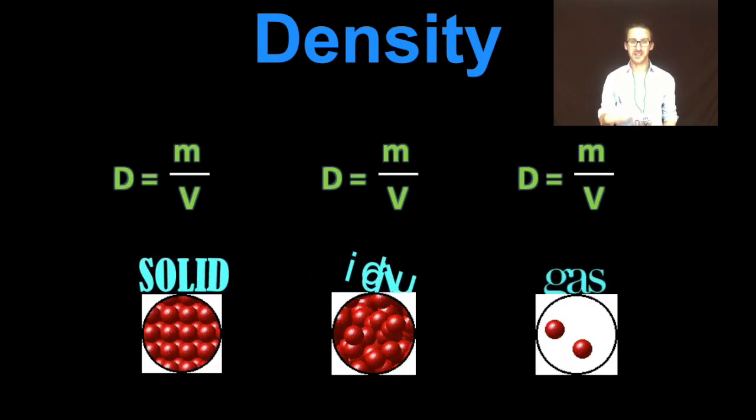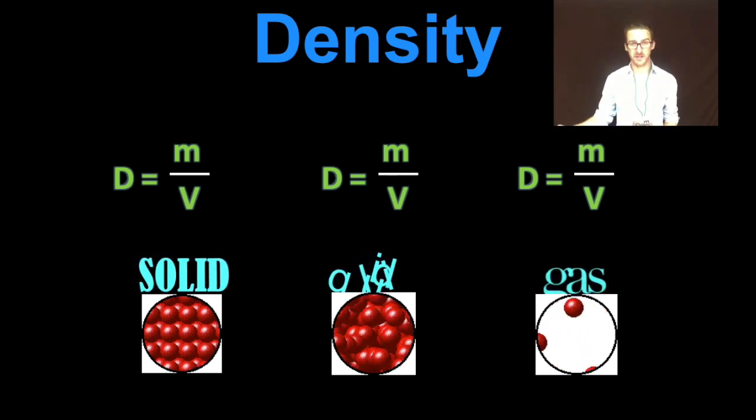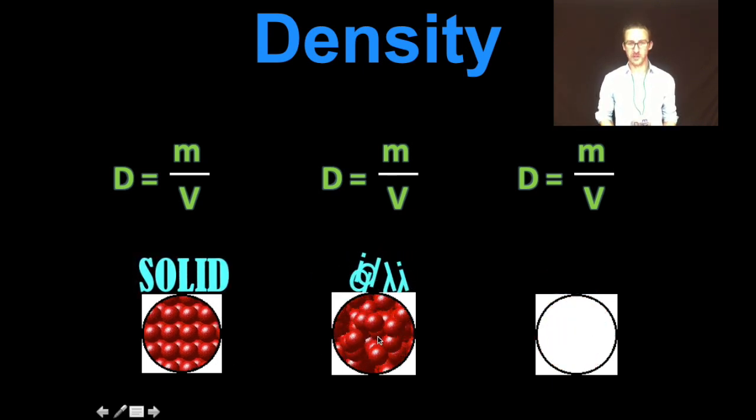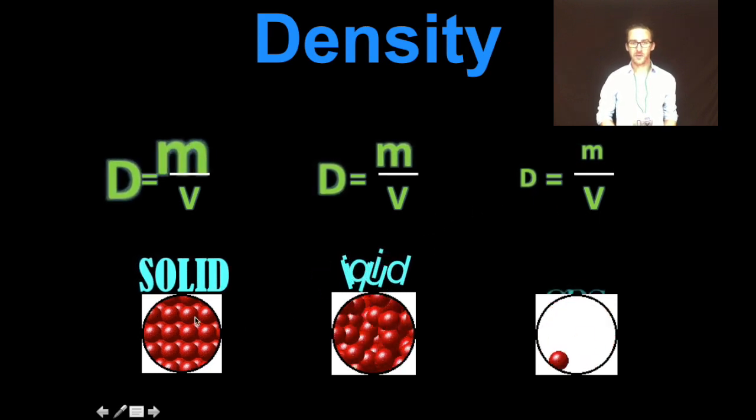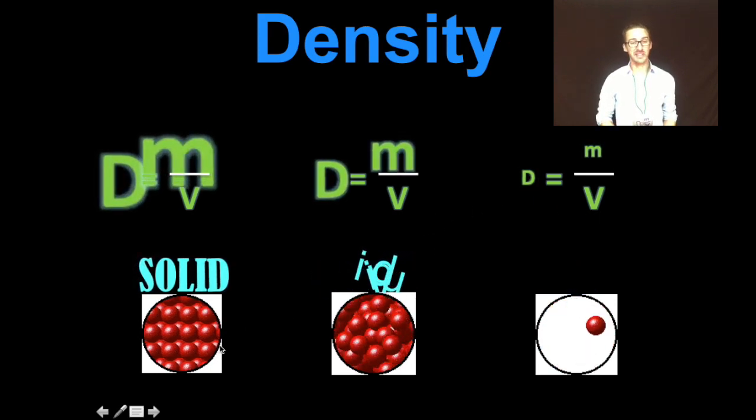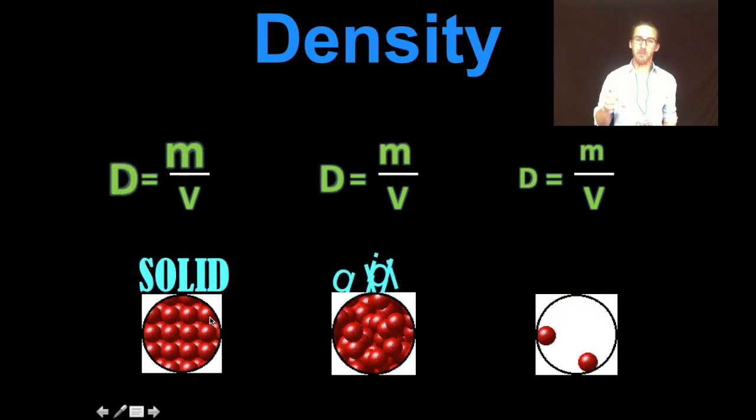Now, to better understand the density formula, I like to think of density of a material in its three different phases. I've pulled equal volumes of different phases of the same substance, so my volume value is going to be the same in each case. However, notice in the solid, generally speaking, we're able to pack more mass, more stuff, in that same amount of volume. My numerator value vastly increases.